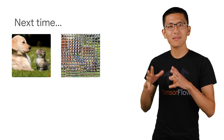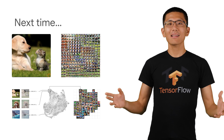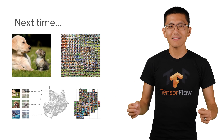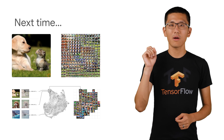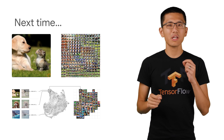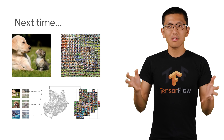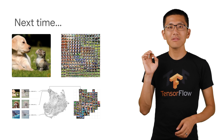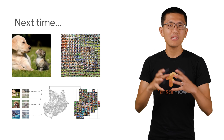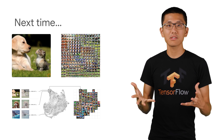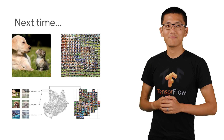And then we can use that to produce an activation atlas, which will give us insight not to one neuron, channel, layer, or just an image, but will allow us to see how the entirety of the network operates as one cohesive unit.